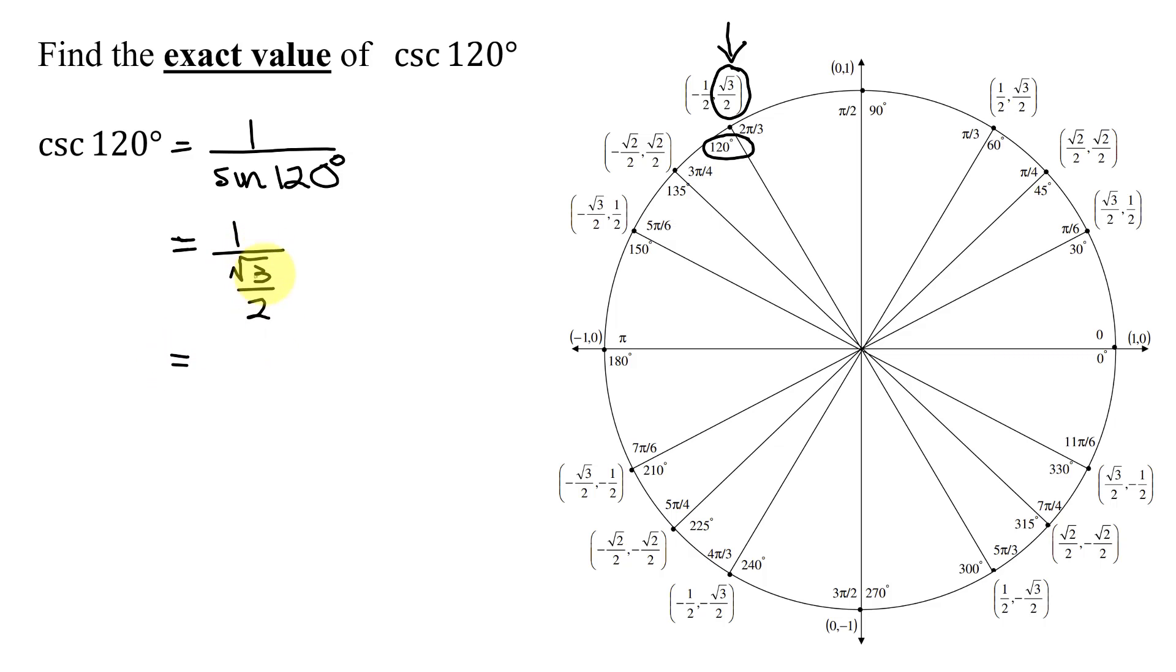Now how do you divide by a fraction? You multiply by the reciprocal. So you take your numerator of 1, multiply it by the reciprocal of the square root of 3 over 2, which means just flip it upside down, you get 2 divided by the square root of 3.